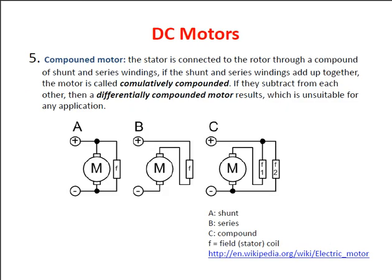Compound motors: the stator is connected to the rotor through a compound of shunt and series windings. If the shunt and series windings add up together, the motor is called a cumulative compound. If they subtract from each other, a differentially compound motor results, which is unsuitable for any applications. This is a shunt motor, this is a series motor, and this is a compound motor.